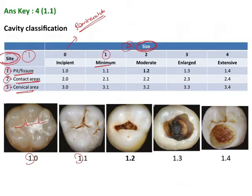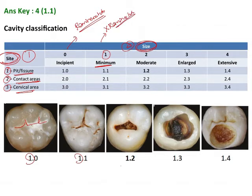Size 1 is minimum. Here there is initial cavitation that has occurred, with involvement of the dentine, and treatment cannot be done by remineralization alone. So remineralization is not sufficient; it needs some sort of restoration as well.